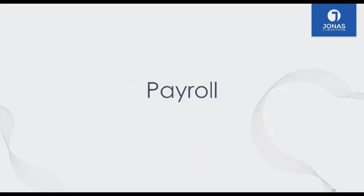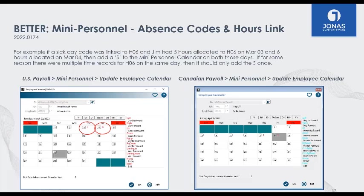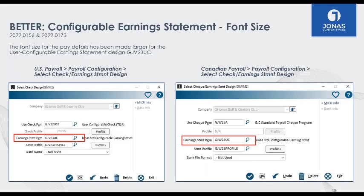Moving over to Payroll. Jonas has both a US and Canadian payroll module and we've made changes to both. The first change applies to both: you can now link an hours code to a type of absence. When you link hours codes to absences and look at the employee calendar in payroll, you'll be able to see on the employee calendar that the employee has absence codes and that the hours are linked to them.